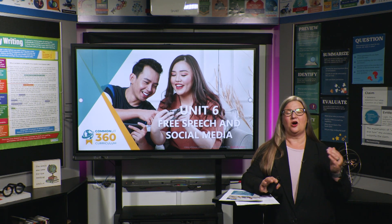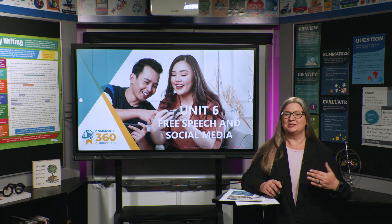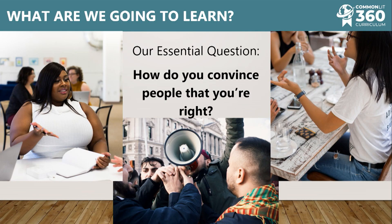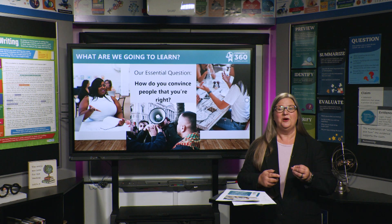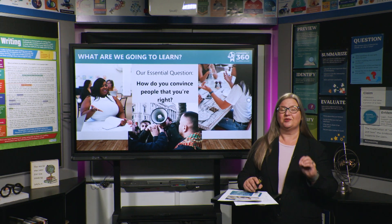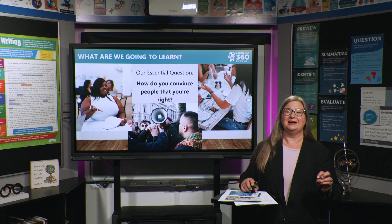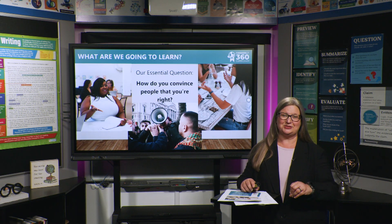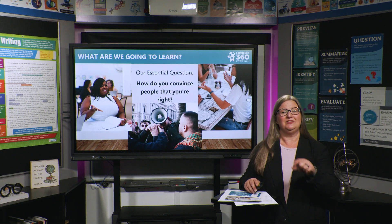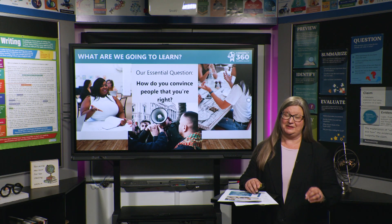All of the resources are listed in this unit on CommonLit's website for your teacher to gain access to. At the end of the unit, you are going to be writing an argument, but our essential question is: how do you convince people that you're right? The core of what we are looking to do with this unit is convincing someone that your position on students' free speech on social media — or whether or not students should be punished for social media posts — does that go against that First Amendment right?